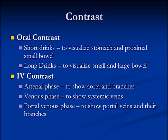We can also use intravenous contrast — iodine compounds that we inject in the arm — and we can catch the contrast within the abdomen in three separate phases. We can catch it in the arterial phase to show the aorta and its branches, the venous phase to show the systemic veins, and the portal venous phase to show the portal veins and their branches.